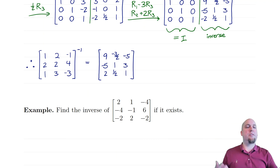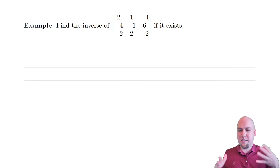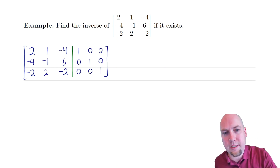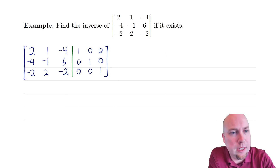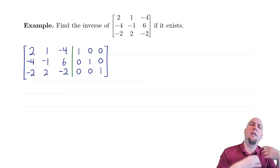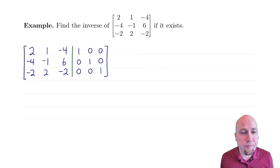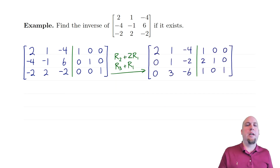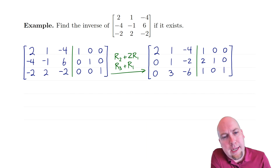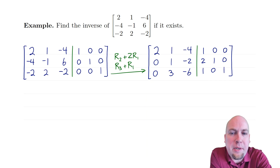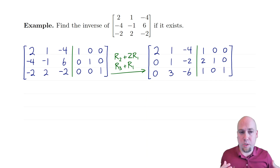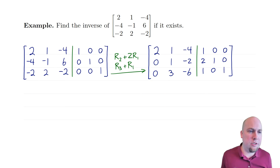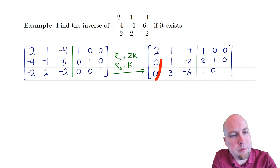Let's find the inverse if it exists of another three-by-three matrix. Setup is the same: three-by-three matrix on the left, three-by-three identity on the right. Row reduce to try to get identity on the left. I'll do a couple of row operations to get zeros in the left column — I'm skipping the step of getting a one up top first because the bottom two entries are already multiples of two, so I'm avoiding fractions as long as I can. I do those addition row operations to get zeros down there.